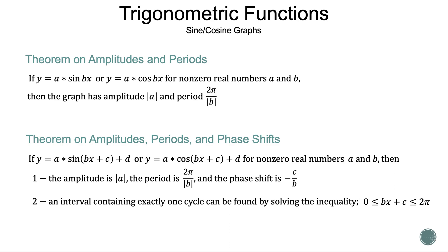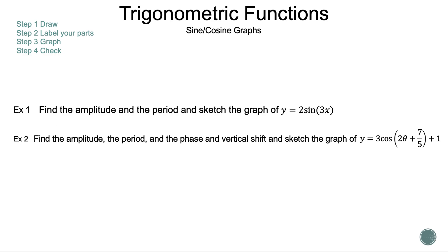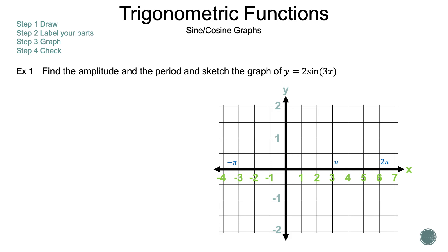Now we've seen the models and the math — let's see them in action by taking a look at the examples. Let's take a closer look at example one. The steps are: step one, draw; step two, label your parts; step three, graph; step four, check. The question: find the amplitude and the period and sketch the graph of y is equal to 2 sine of 3x.